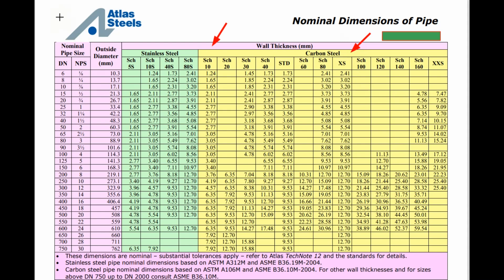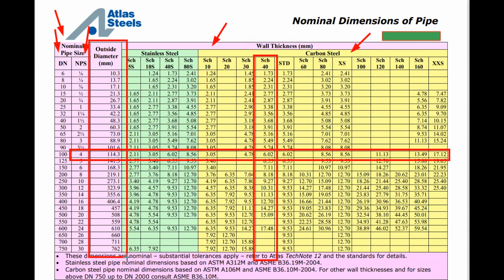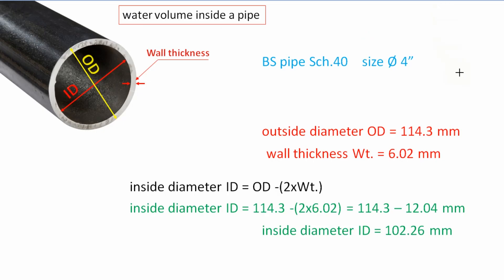The first two columns are for pipe size — the first column uses the DN system in millimeters and the second column uses the NPS system in inches. Our pipe size is 4 inch, so we select the row for 4 inch. We select the column for schedule 40 and also the outside diameter column. For a 4 inch schedule 40 carbon steel pipe, the wall thickness is 6.02 mm and the outside diameter is 114.3 mm. Using the formula, we calculate the pipe inside diameter equal to 102.26 mm.